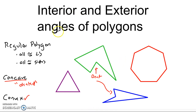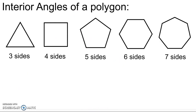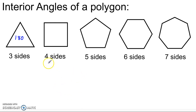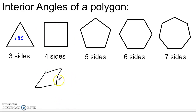Let's jump right in and talk about interior angles of polygons. One of the first things you want to know is how to find the sum of the interior angles of a polygon. The best place to start is with a polygon you know. Most of us know that the sum of the interior angles of a triangle is 180 degrees. So I might ask: what's the sum of the interior angles of something with four sides? This looks like a square, but it could be any four-sided polygon.